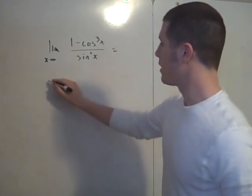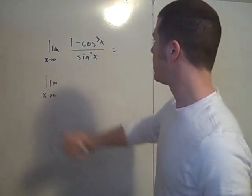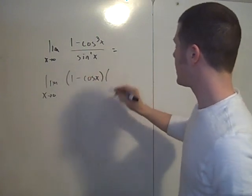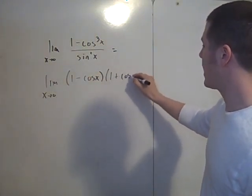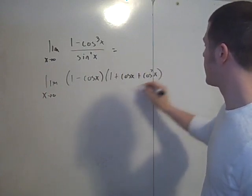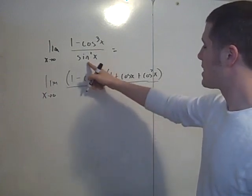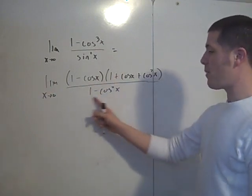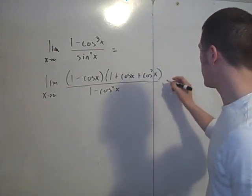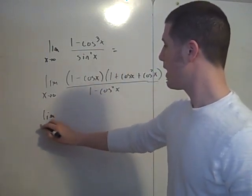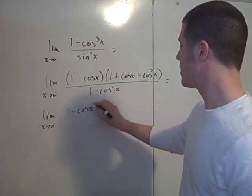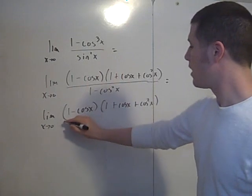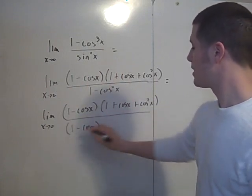So this is equal to the limit as x goes to 0. The numerator is a difference of cubes, so it factors as 1 minus cosine x times 1 plus cosine x plus cosine squared x. The denominator, sine squared x, equals 1 minus cosine squared x by the Pythagorean identity. The denominator is a difference of squares and is factorable, giving 1 minus cosine x times 1 plus cosine x.